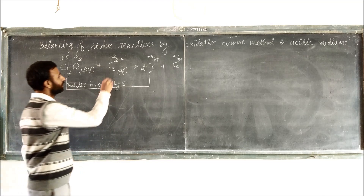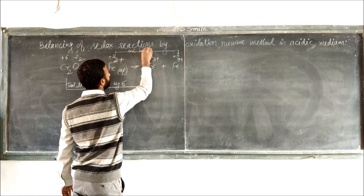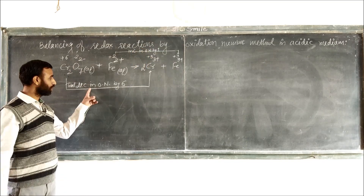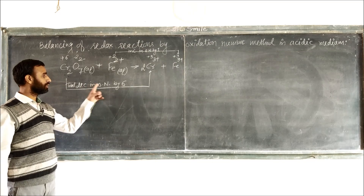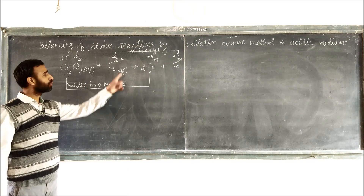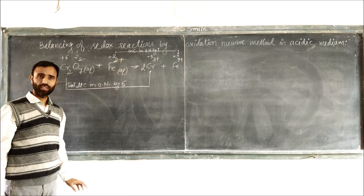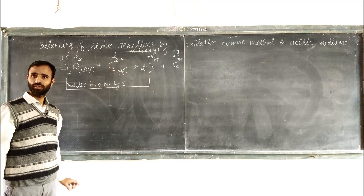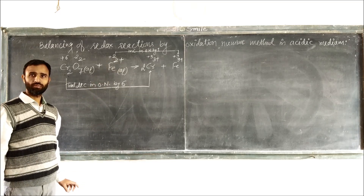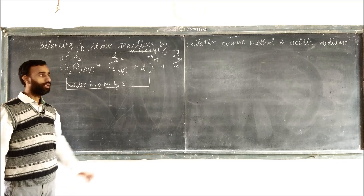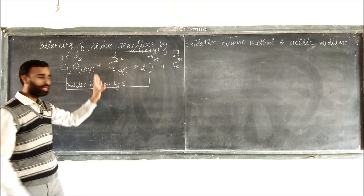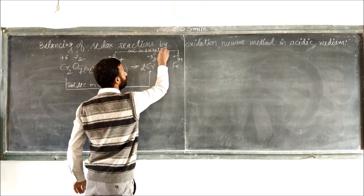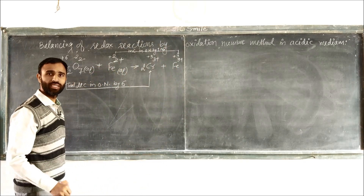The total increase in oxidation number is 1, and the total decrease is 6. To balance the two, we multiply the first equation by 6 — meaning Fe²⁺ → Fe³⁺ should be multiplied by 6.